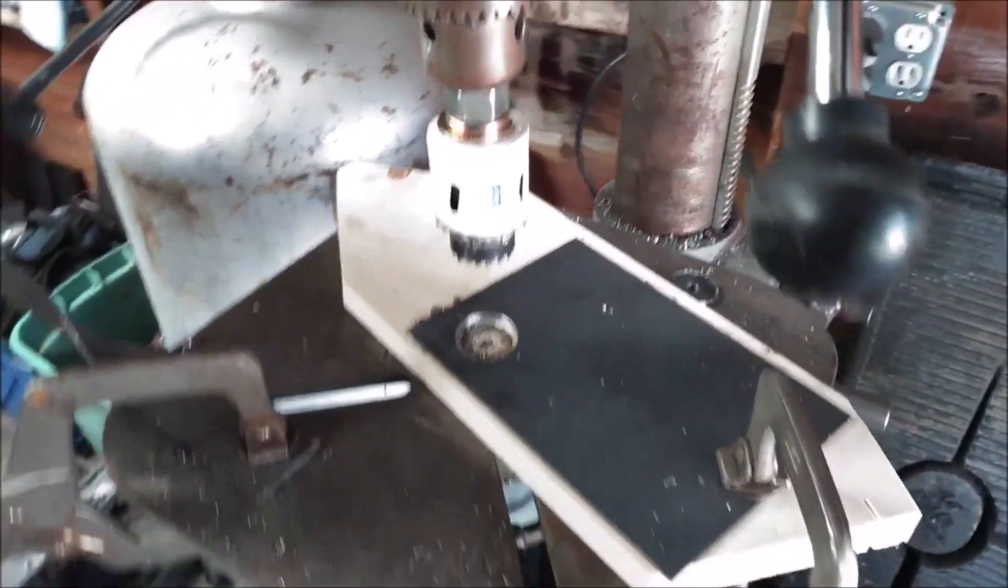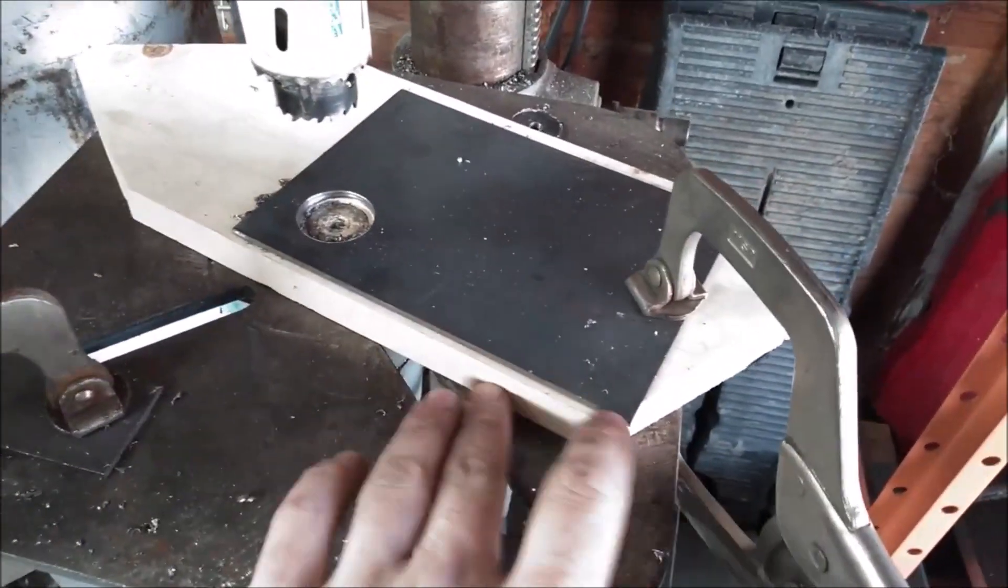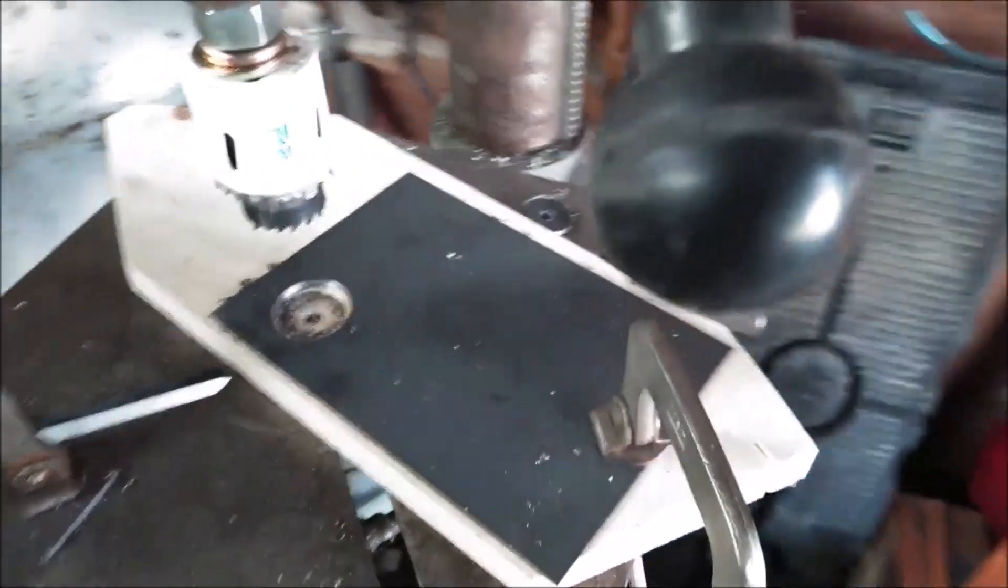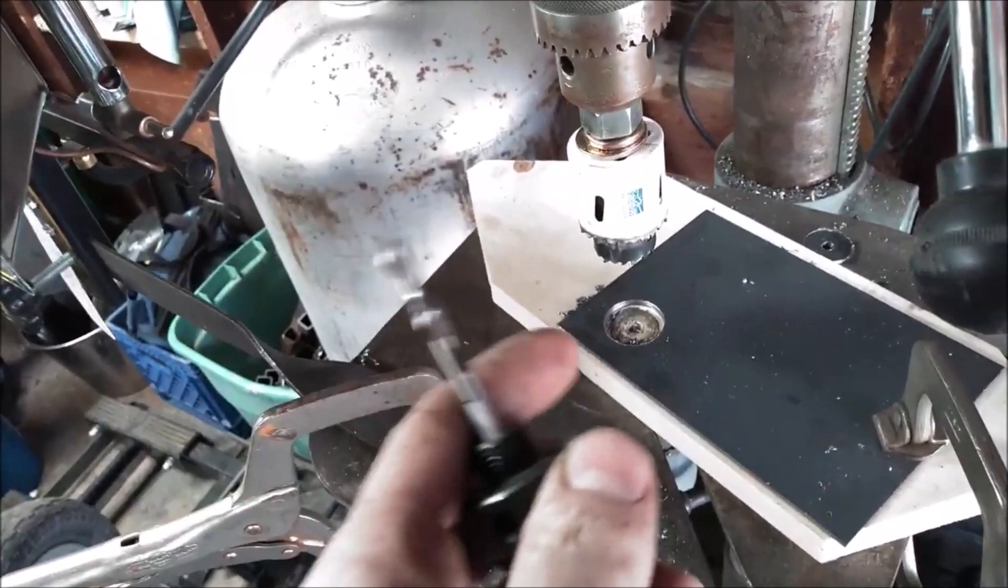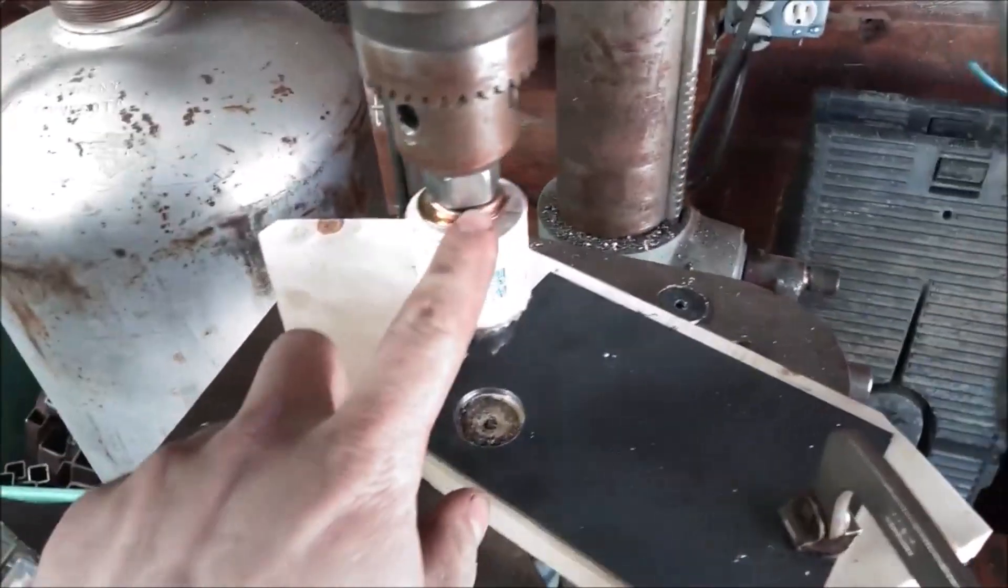Two quick hole saw tricks for you. If you're using a drill press and you don't want to ruin your plate here, just put a board underneath it. The second one I have set up here: if you use one of these, you can only put one hole saw on it. But if you take a 5/8 fine thread bolt, you can put two hole saws on it.